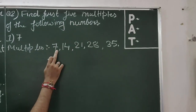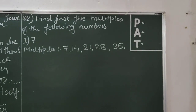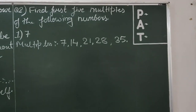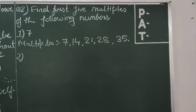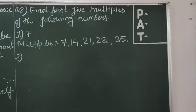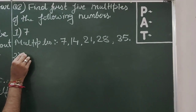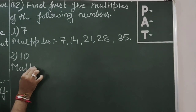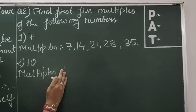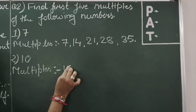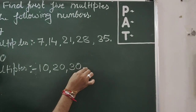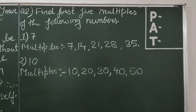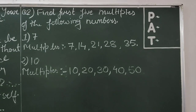We are supposed to write down only the first five multiples — 1, 2, 3, 4, and 5 — because the multiples are infinite. Question 2, second number: multiples of 10. First five multiples of 10 are: 10, 20, 30, 40, and 50.